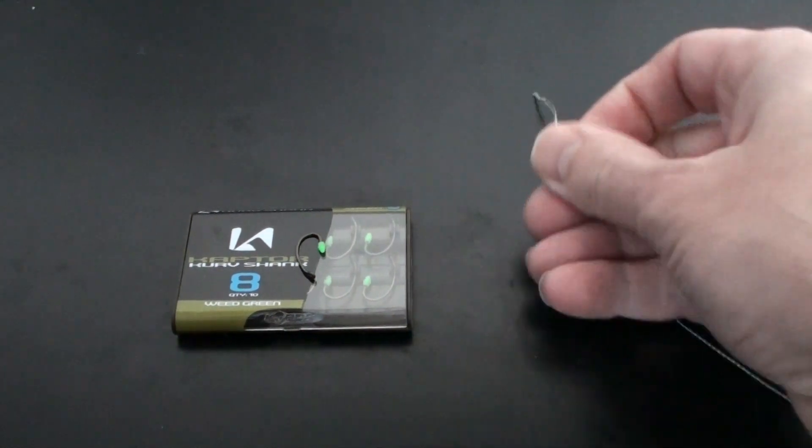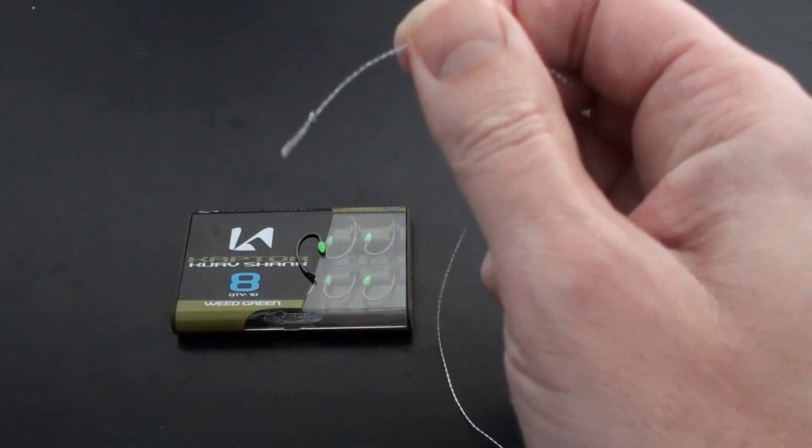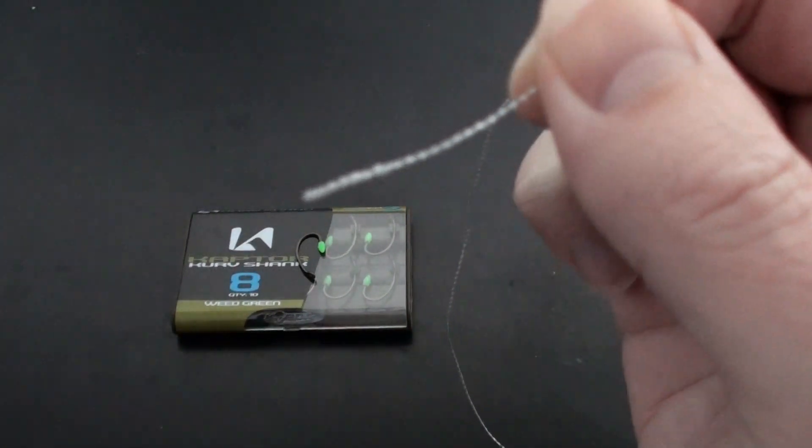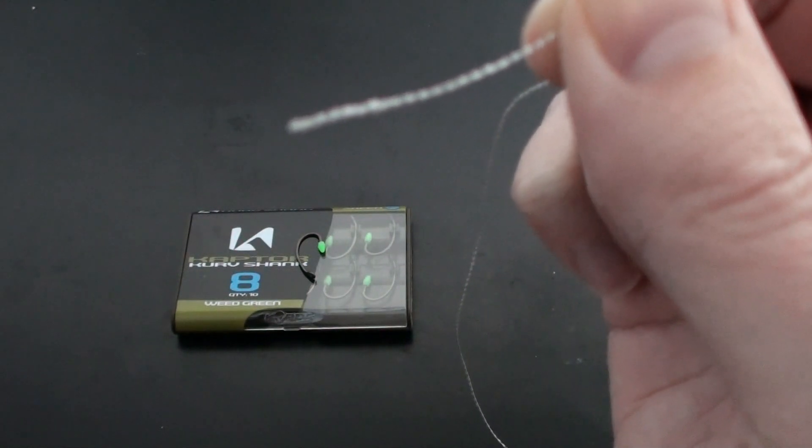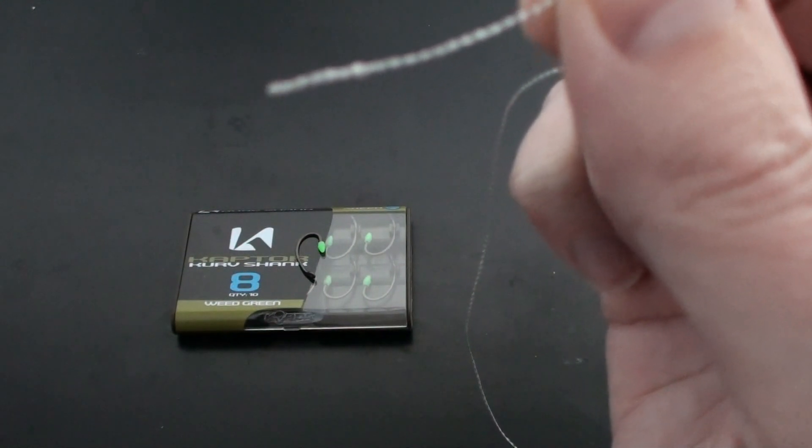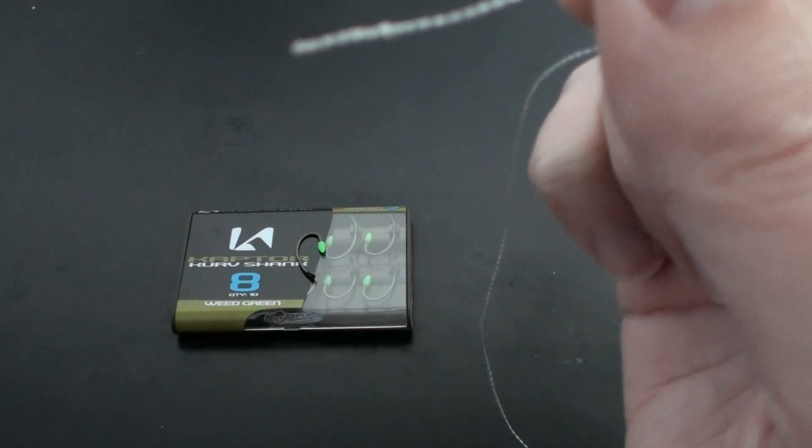The first thing we need is our chosen hook length material with a simple loop at the end. Hopefully you have done that from lesson 1 anyway. You can use any hook length material - it can be braid, mono, fluorocarbon or a combi link material.